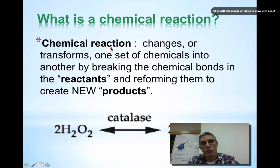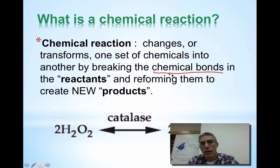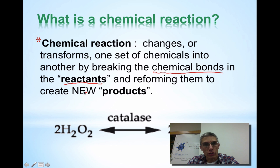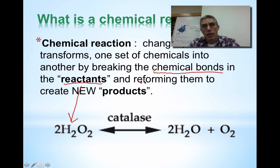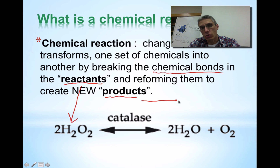That doesn't mean there's a difference in terms of the definition. A chemical reaction is simply a change or transformation of one set of chemicals into another by the breaking of chemical bonds. We're looking at two sides to that chemical reaction. We're looking at the reactants, which are the parts that you're going to bring together. For this chemical reaction, this is hydrogen peroxide, H2O2, and this is going to be the reactants for this reaction.